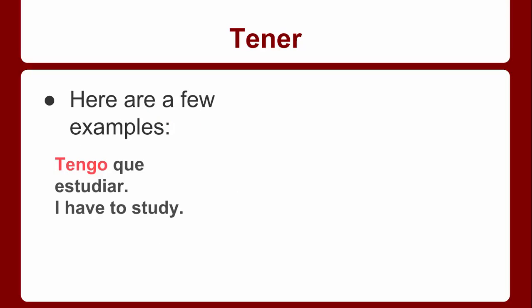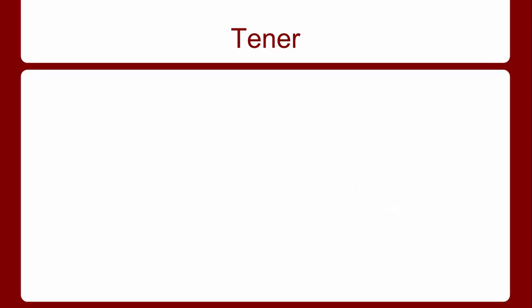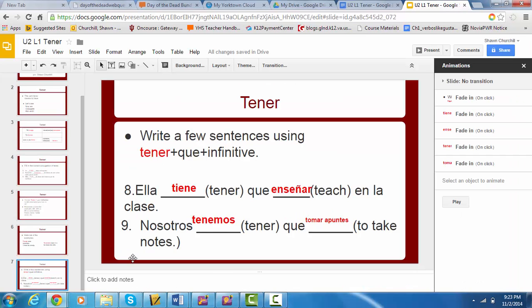Here are a few examples: Tengo que estudiar — 'I have to study.' Or tenemos que ir a la clase de arte — 'We have to go to art class.' Now focus on numbers eight and nine on your note guide. 'She has to teach in the class' — ella tiene que enseñar en la clase. 'We have to take notes' — nosotros tenemos que tomar apuntes. I hope you understand the verb tener and tener plus que plus the infinitive. Be ready for your flip mini quiz the next time that we meet. ¡Adiós!